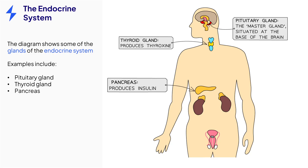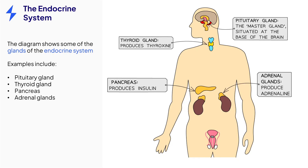The pancreas has many jobs, such as releasing enzymes for digestion, but in addition to this it can also make hormones. Insulin is an example, which helps to lower the amount of glucose in the blood. The adrenal glands sit on top of the kidneys and can secrete adrenaline, which helps to control our fight or flight response.